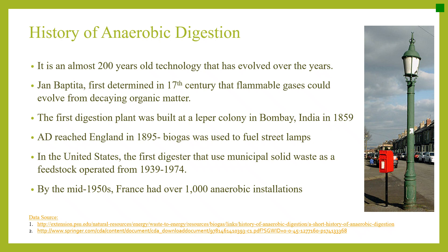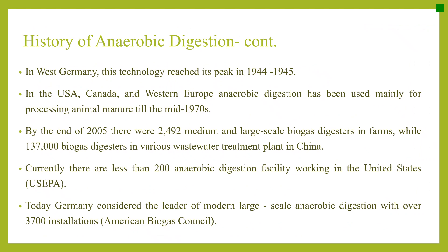By the mid-1950s, France had over 1,000 anaerobic installations. In West Germany, this technology reached its peak in 1944 to 1945. In the USA, Canada, and Western Europe, anaerobic digestion has been used mainly for processing animal manure till the mid-1970s. By the end of 2005, there were about 2,492 medium and large-scale biogas digesters on farms, while about 137,000 biogas digesters in various wastewater treatment plants in China. Currently, there are less than 200 anaerobic digestion facilities operating in the United States. Today, Germany is considered the leader of modern large-scale anaerobic digestion with over 3,700 installations.